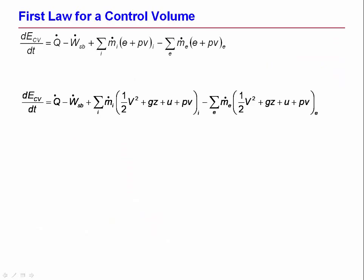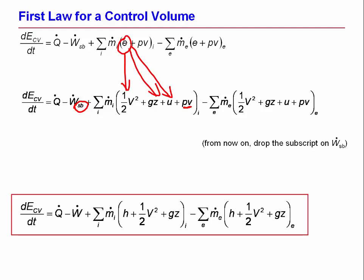That's the same equation. Then I'm going to take each specific energy term and break it out into kinetic energy, potential energy, and internal energy. The next thing we're going to do is drop the subscript SB from now on. We're going to write Ẇ for shaft and boundary work because the flow work is dealt with by this PV. This PV, you remember, came from ṁPV, which was the flow work. Final step here that we're going to do is take U plus PV and recall that U plus PV is enthalpy.